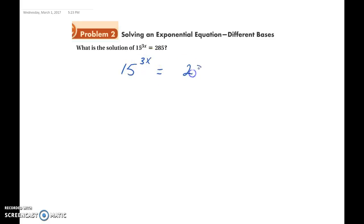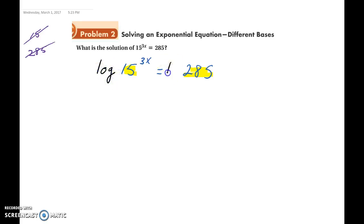Let's try an example: 15 raised to the 3x power equals 285. First, can we rewrite 15 and 285 as the same base raised to a power? No, we can't. So we use the new method: take the logarithm of each side. Since 15^(3x) equals 285, we take log of both sides — strategically using log base 10.